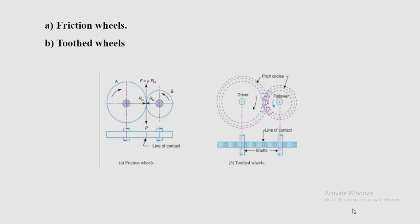In order to avoid slipping, projections called teeth are provided on the periphery of wheel A, as shown in figure (b). These teeth fit into the corresponding recesses on the periphery of wheel B. The engagement of teeth transmits motion from one shaft to another without slipping.